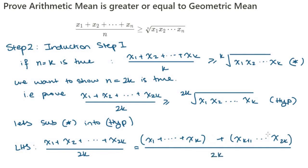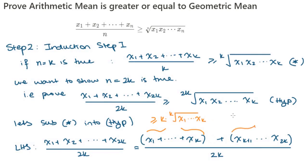The first part of the equation we can rewrite as k times the kth root of x₁ through xₖ, and the second part of the equation is k times the kth root of xₖ₊₁ through x₂ₖ.